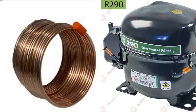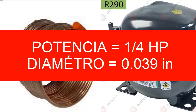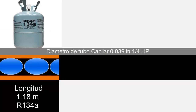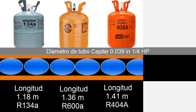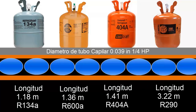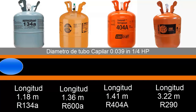Let's start with the first refrigerant: for R-134A the length of the capillary must be 1.18 meters. With this same diameter of 0.039 inches the length must be 1.36 meters when we work with R-600A. When we go to R-404A the length must be 1.41 meters, and when we work with R-290 the length of the capillary must be 3.22 meters.